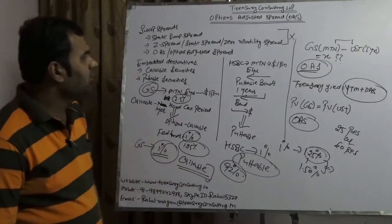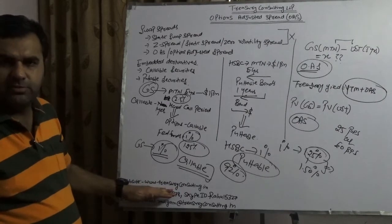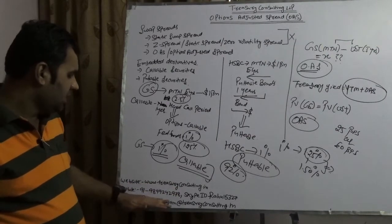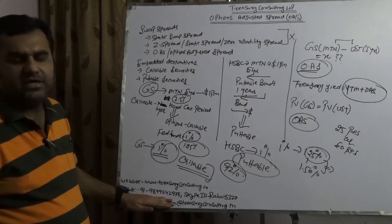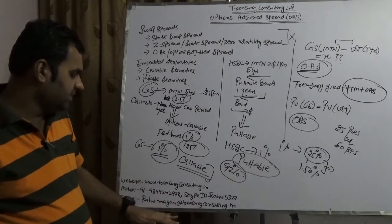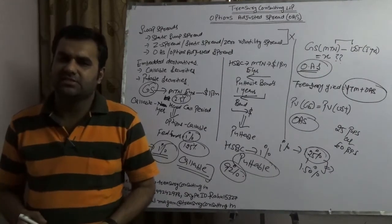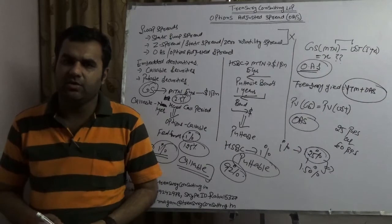This was all about options adjusted spread. You are always welcome to visit our website www.tragedyconsulting.in. My mobile number is 9899242978, my Skype ID is Rahul5327, my email is RahulTotMagan at tragedyconsulting.in. Thank you and have a wonderful time.